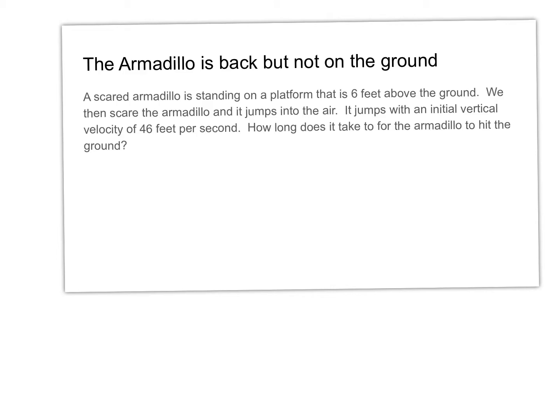First thing you do when you're doing a word problem is you read it. Don't do anything else but read it. Now the second time we go through this, we pick out all the information. The armadillo is standing on a platform that is six feet above the ground — that's very important. It jumps with an initial vertical velocity of 46 feet per second.